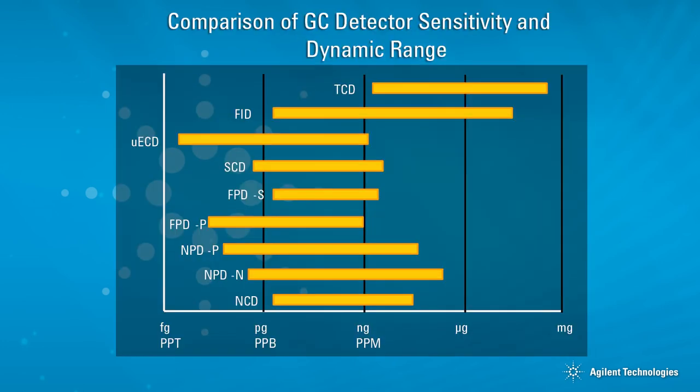Sensitivity is technically what change in response is achieved per a change in sample concentration. The MDL speaks to how low of a concentration a detector can still provide a measurable response for when a measurable response is defined as a peak height two to three times the noise level. This is a graph that depicts the detection limit and the dynamic range for each of the more common GC detectors.